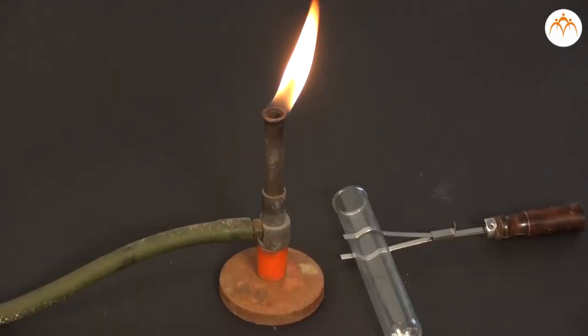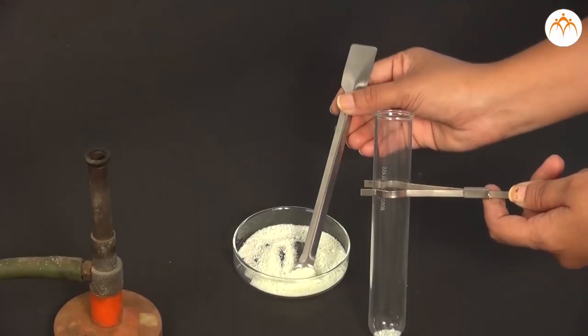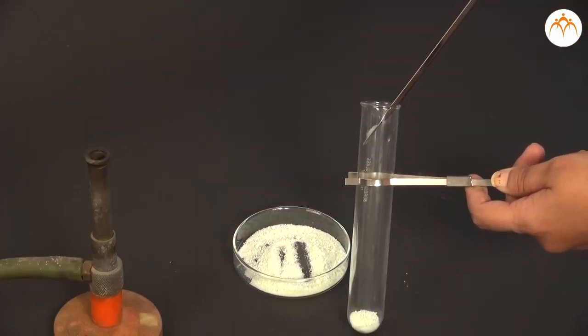Effects of heat on crystals of ferrous sulphate. Requirements for this experiment are ferrous sulphate, test tube, burner or spirit lamp. Take 10 ml of powdered crystals of ferrous sulphate in a test tube.